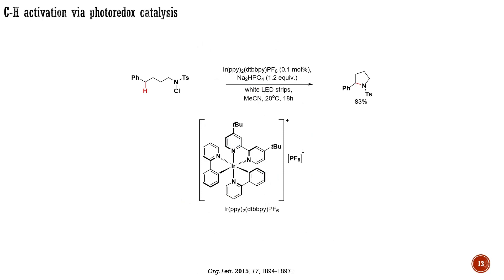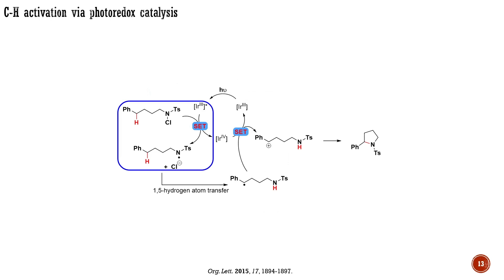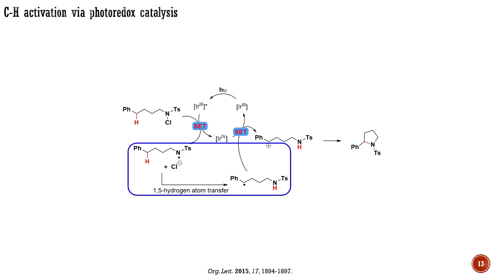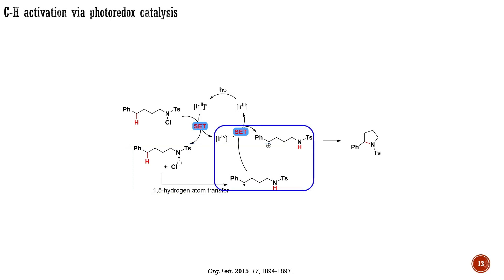The next example is an iridium-catalyzed intramolecular amination of the benzylic CH bond with N-halogenated tosylates, published in 2015. In this case, the photoactivated iridium-3 catalyst donates an electron to the substrate, generating this nitrogen-centered radical. The radical abstracts a hydrogen atom from the benzylic position, creating a more stable benzylic carbon-centered radical. In the next stage of the process, the formed radical undergoes a one-electron oxidation by an iridium-4 intermediate, regenerating the active photocatalyst and producing a benzylic carbocation. This carbocation undergoes intramolecular coupling with the amide, forming the product and releasing a proton. In this example, the activated photocatalyst donates an electron to the substrate, while in the previous example, the activated photocatalyst took an electron from the substrate to initiate the reaction.